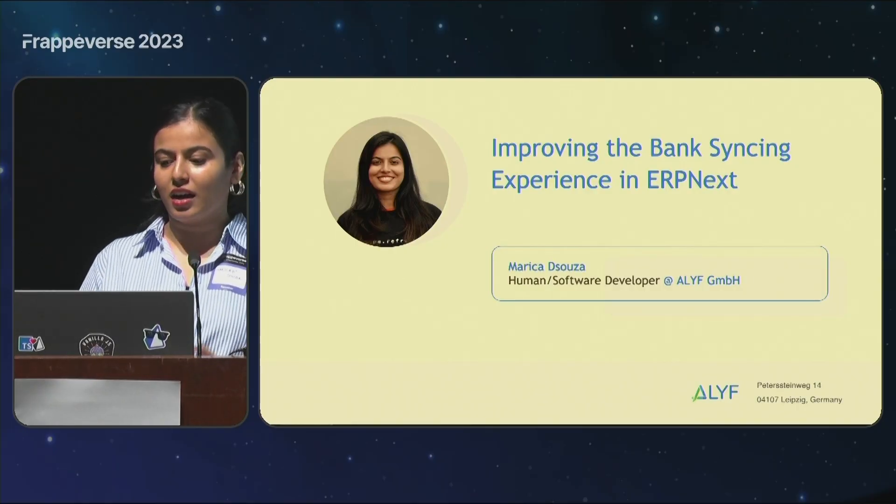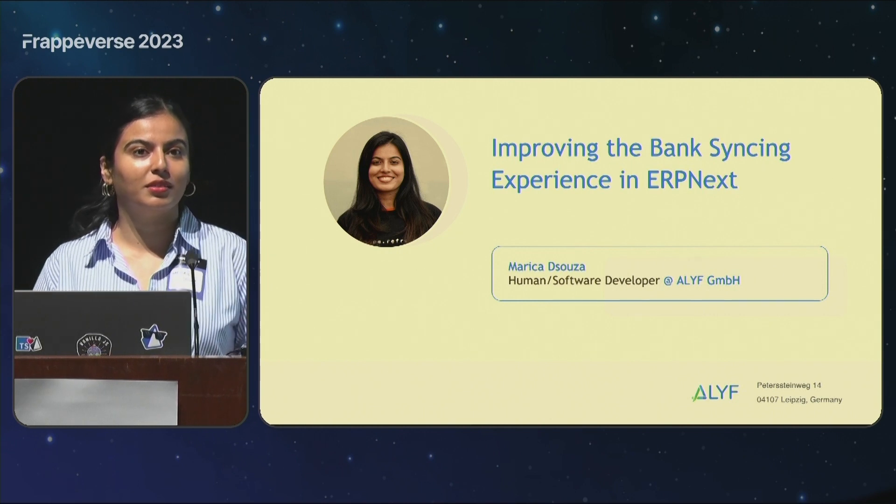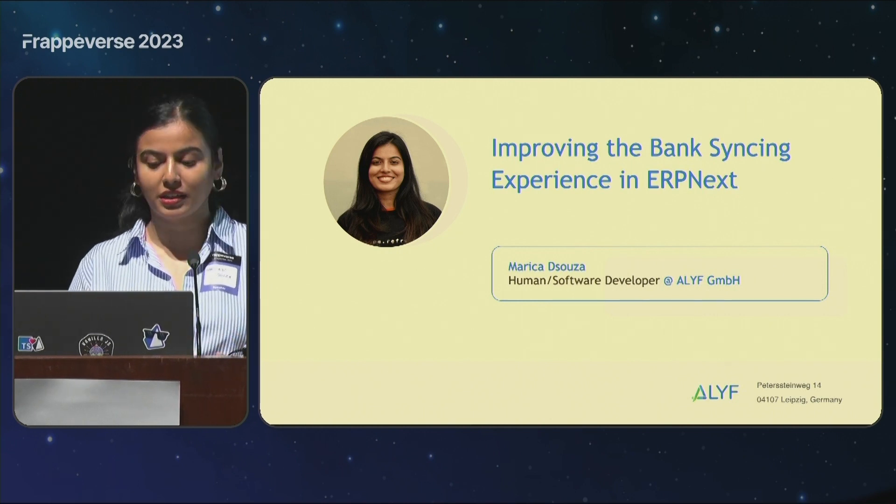Hi, good afternoon everyone. I'm pretty sure I'm going to forget all the things I've rehearsed and I'll just stick to what I know and stay true to it. My name is Mareka D'Souza and I am representing my organization Alive JMBH here. We are a FRAPPE partner in Germany based in Leipzig, and our company was founded by my colleagues Rafael and Samuel in 2020.